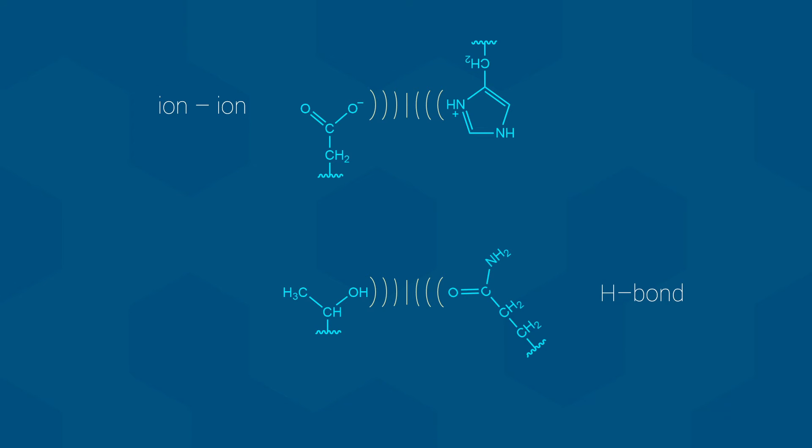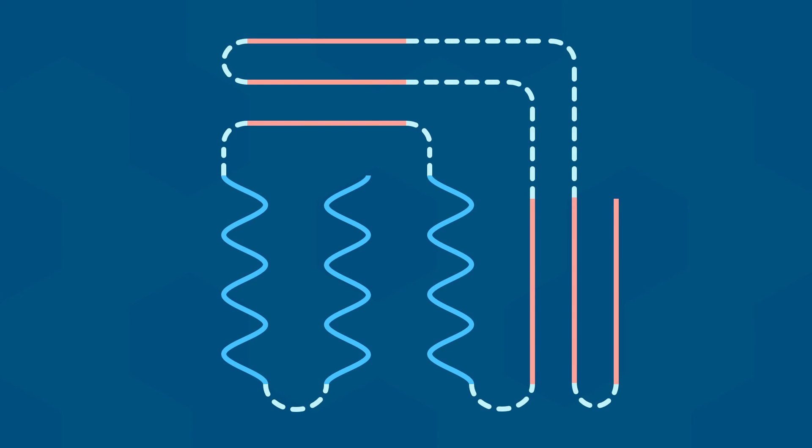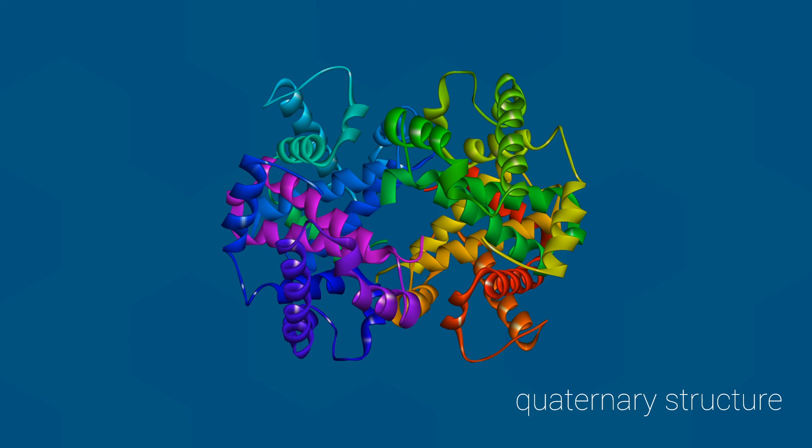And so, we come to the final level of protein structure. Before I talk about it, it is important to note that not all proteins have this level of structure. The requirement for this level of structure is that the protein must comprise two or more individual polypeptide chains. As you saw earlier, RNase consists of a single amino acid chain and therefore does not qualify. This final level of protein structure is known as the quaternary structure. For this, let me use the protein shown here as an example, hemoglobin.